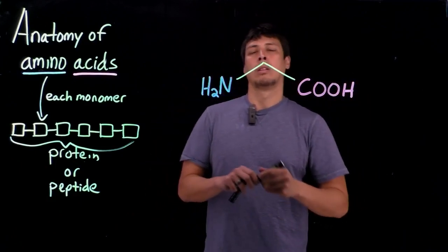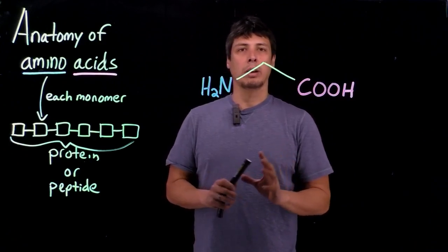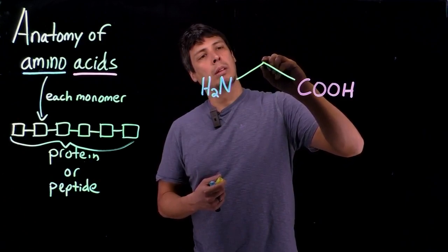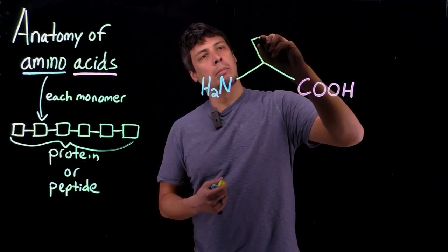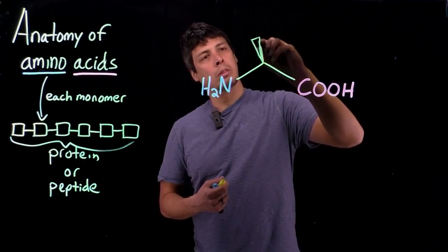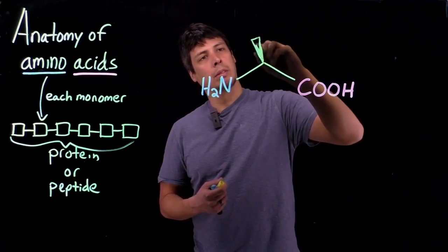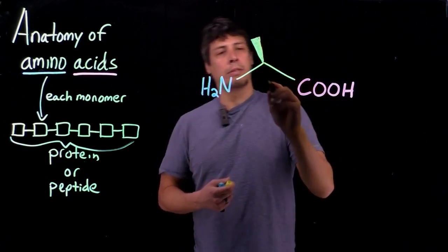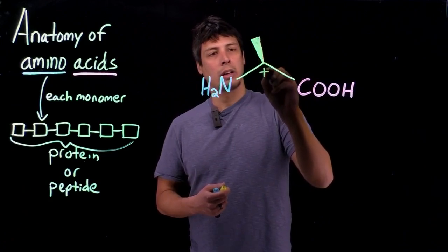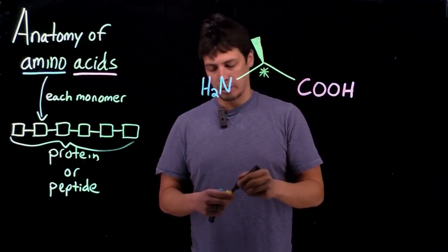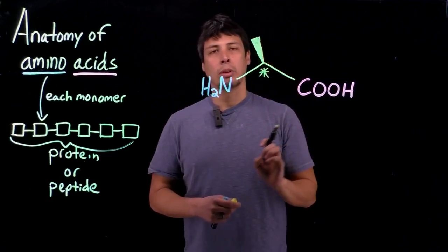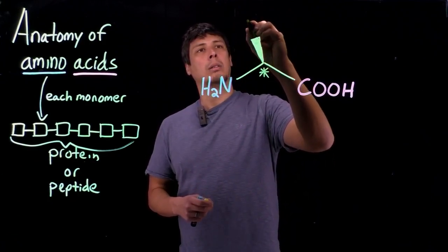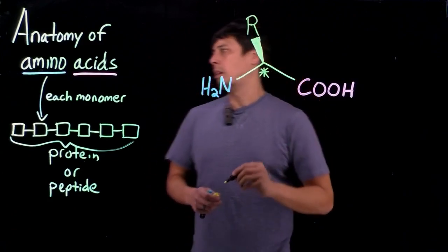And then, there are 20 different amino acids that we usually discuss. And what differentiates them is their R group, their side chain. So, this comes off what's known as the alpha carbon, which has chirality. So, this is a chiral center, this carbon has four different groups attached to it. And we denote the side group, generally, as R.